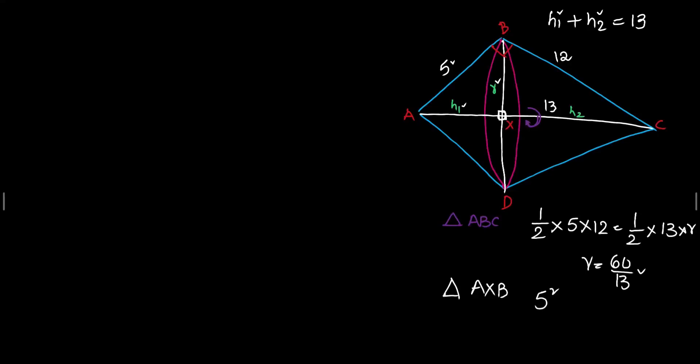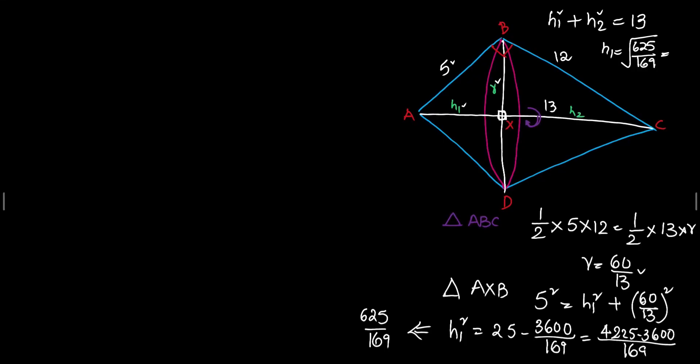5 square, hypotenuse square equals to H1 square, we do not know what it is, plus R square which we just found out that it is 60 by 13 whole square. So, what is H1 square then? H1 square equals to 25 minus 60 square that is 3600 divided by 13 square that is 169. Now, 25 into 169 is 4225 minus 3600 divided by 169. Now, that will give us 625 by 169. So, from that we can say that H1 equals to square root of 625 divided by 169 that is equals to 25 by 13.